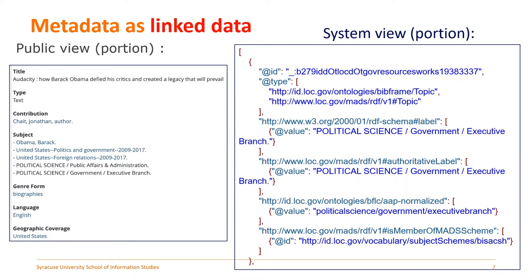In linked data, you don't refer to things as 'records' — everything is a statement. A statement is structured as subject, predicate, object. For example: the book has a title — 'Audacity.' The book has a creator. The book has a topic — the topic is about a person, and the person is Obama. Everything can be expressed as a triple.